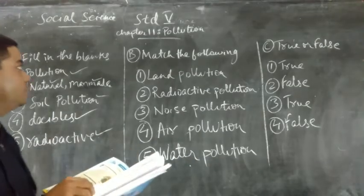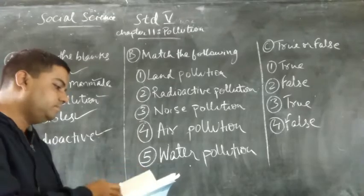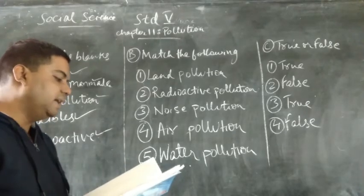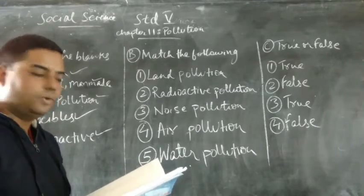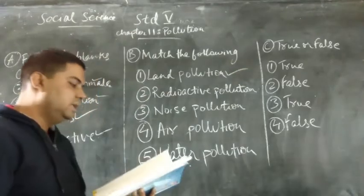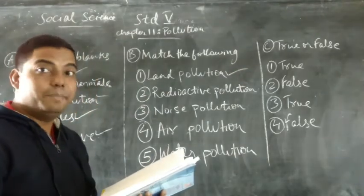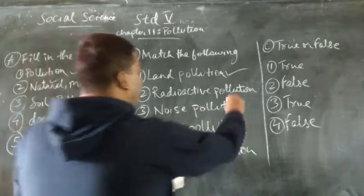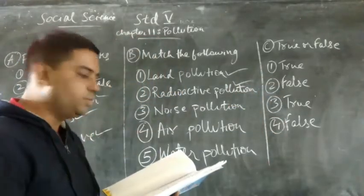Now we move on to question number B, match the following. Question 1: Household garbage on streets — the matching answer is land pollution. Question number 2: Uranium leak — the answer is radioactive pollution.